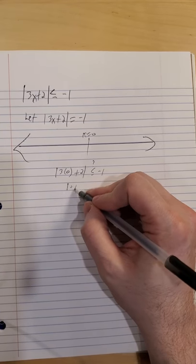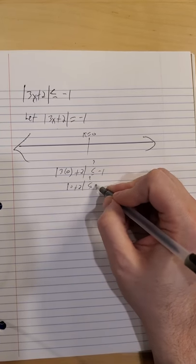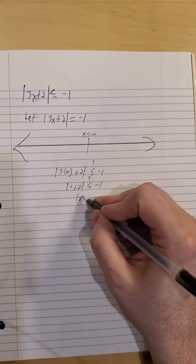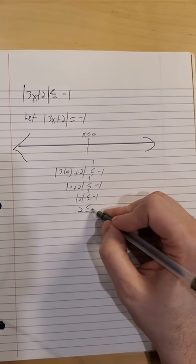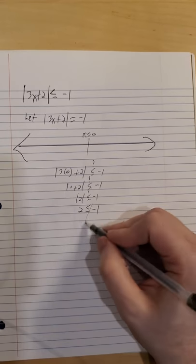So absolute value of 0 plus 2, possibly less than or equal to negative 1. Absolute value of 2 might be less than or equal to negative 1. Positive 2 less than or equal to negative anything does not work.